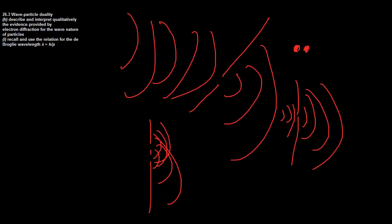What they did was try to produce a diffraction pattern with a beam of electrons. They took a thin foil and shot a beam of electrons through it onto some graphite, and then took a diffraction pattern. I'm going to bring up a picture of that right now to show you what it looks like.